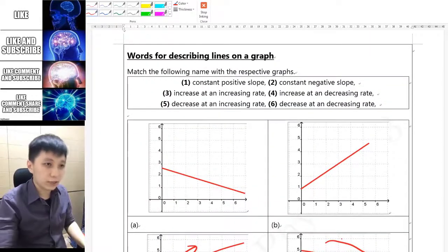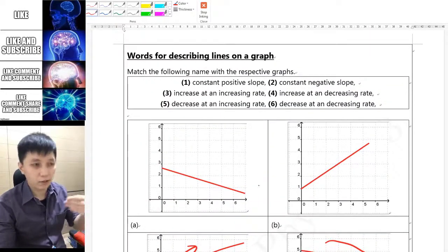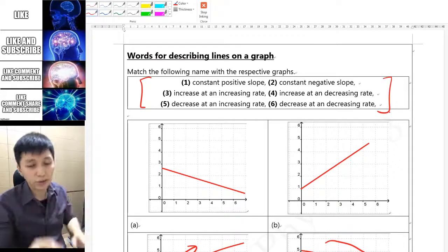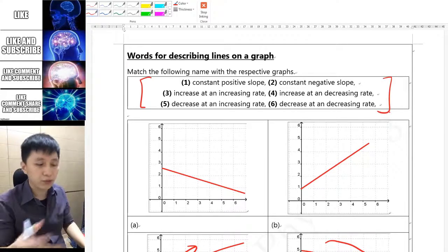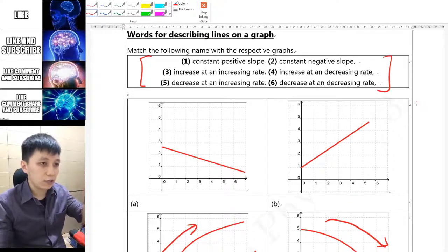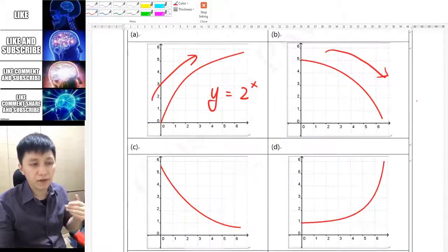Instead, I would say what you can do about describing this graph is you can try to use these six options and that should be pretty good enough for you to cover most of the cases in physics. Right now I want you to pause the video, try to match each of these options with the graph itself, and then we'll check the answers together.